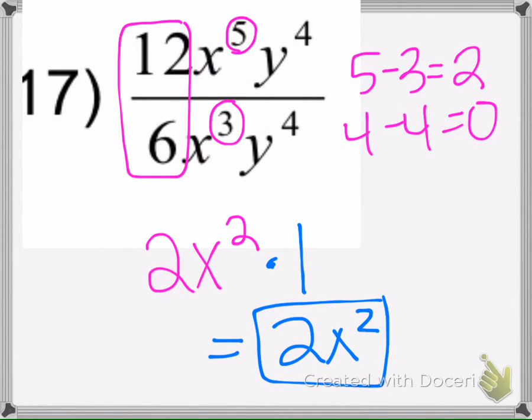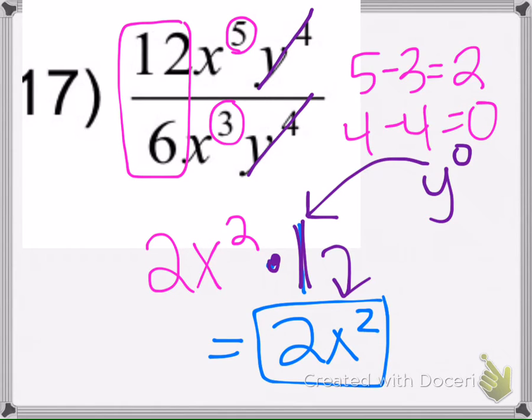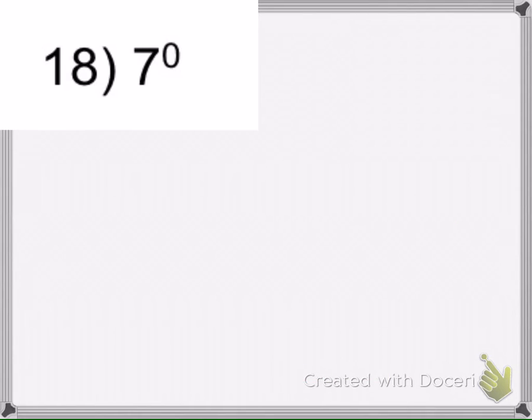And anything times 1 is itself. So that's why they just cancel out. It doesn't make 0, the exponent is 0, and anything with a 0 exponent is 1. But we don't need to write it, because when it's multiplied with the rest of it, it just equals itself.